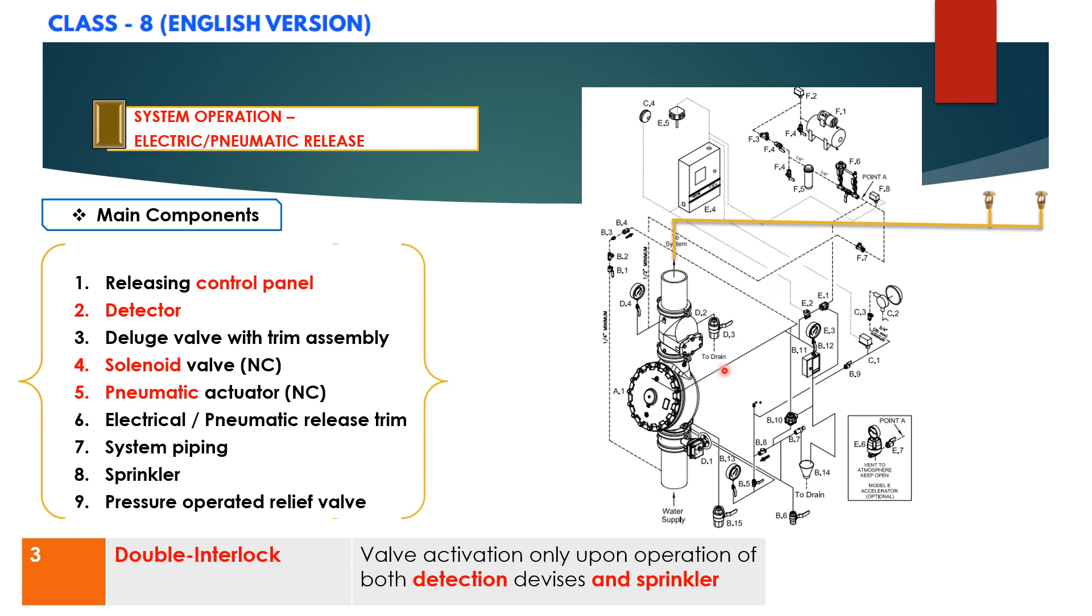pressure is released from the priming chamber to the open drain cup D14 faster than it is supplied through the restricted orifice to the priming chamber.